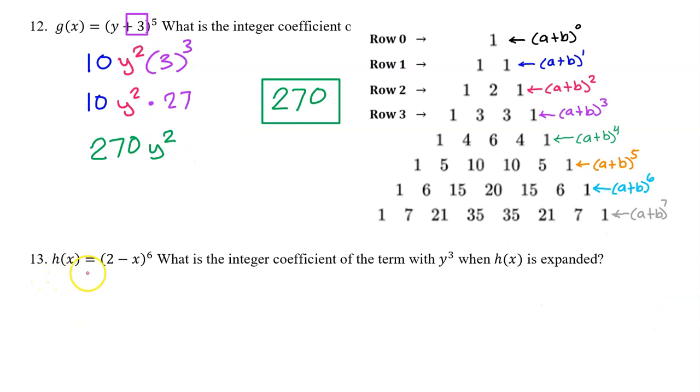Number 13, h(x) = (2 - x)^6. What is the integer coefficient of the term with y to the third power when h(x) is expanded? Small typo right here. These should match. Let's assume they meant x to the third power.